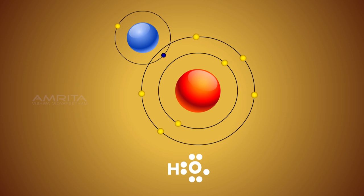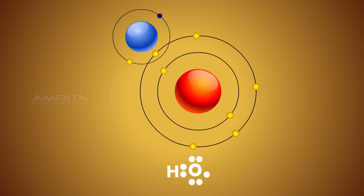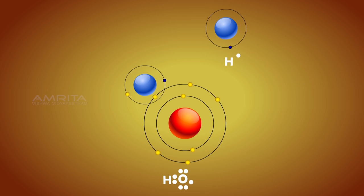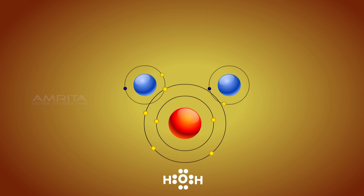Oxygen atom now has seven electrons in its valence shell. By accomplishing its stable octet configuration, oxygen atom shares an electron with another hydrogen atom and forms a water molecule.